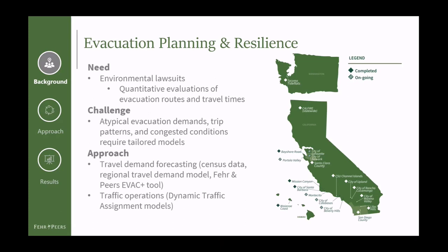Proposed projects go through an environmental process to determine potential impacts on the environment and surrounding transportation network. As a result of recent environmental lawsuits, there emerged a need for these projects to study evacuation routes and travel times to determine whether extra demand on the roadway would cause safety concerns with people being able to evacuate in different scenarios. Evacuation assessments are pretty tricky because of the data available. We've been using regional travel demand models designed for weekday traffic, not for evacuation events like an earthquake, wildfire, or tsunami. Fehr and Peers has recently been involved in evacuation studies in California and Washington, with several more ongoing.